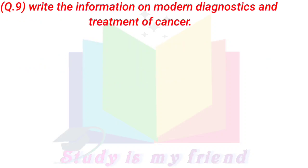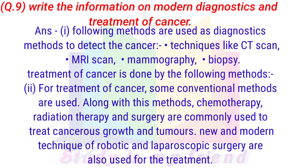Question 9: Write the information on modern diagnostics and treatments of cancer. Answer: 1. The following methods are used as diagnostic methods to detect cancer: techniques like CT scan, MRI scan, mammography, biopsy. 2. Treatment of cancer is done by the following methods: chemotherapy, radiation therapy, and surgery are commonly used to treat cancerous growths and tumors. New and modern techniques of robotic and laparoscopic surgery are also used for treatment.